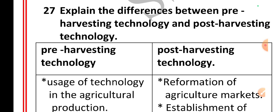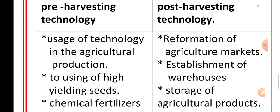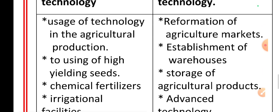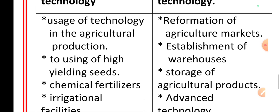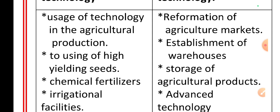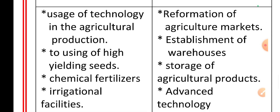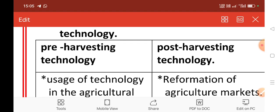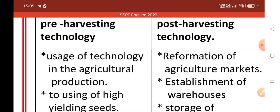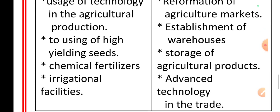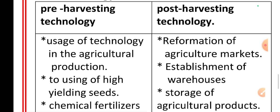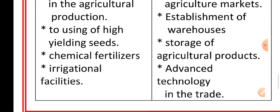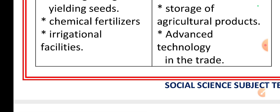Explain the difference between pre-harvesting technology and post-harvesting technology. Pre-harvesting technology refers to the usage of technology in agricultural production — using high yielding seeds, chemical fertilizers, and irrigational facilities. Post-harvesting technology refers to reformation of agricultural markets, establishment of warehouses, storage of agricultural products, and advanced processing technology.